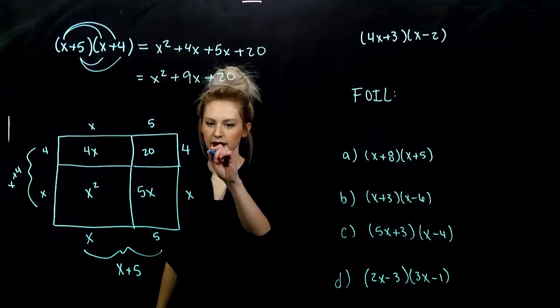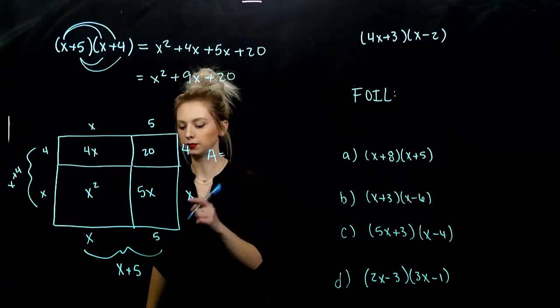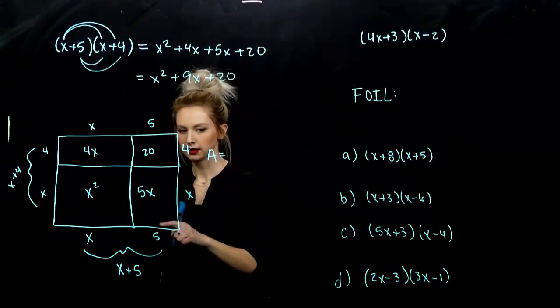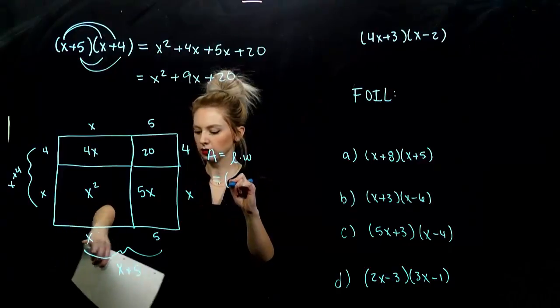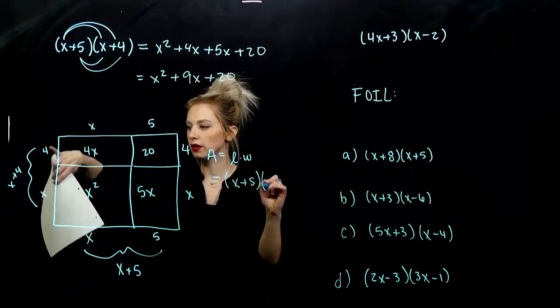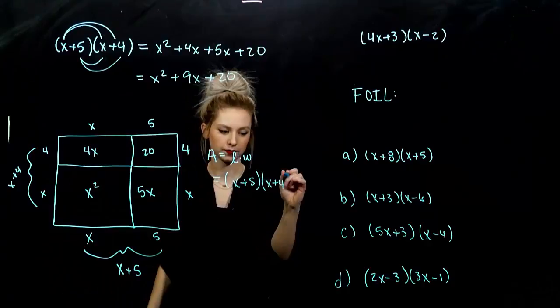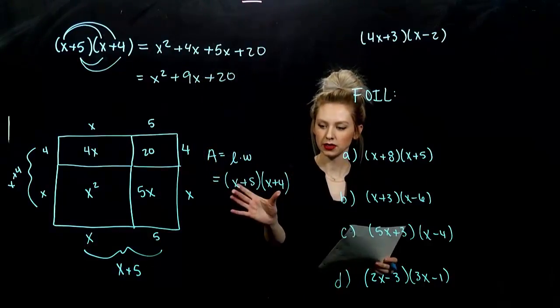So, if we're trying to find the area of the overall rectangle here. Length times width. What are we looking at? Length, x plus 5, times the width, x plus 4.